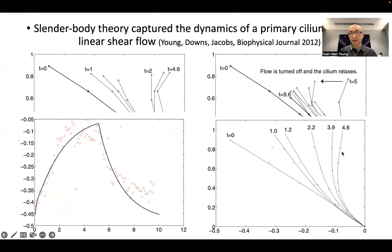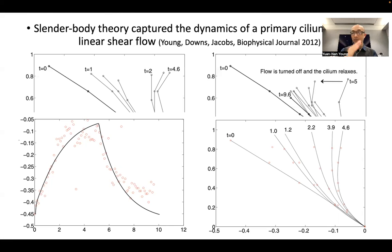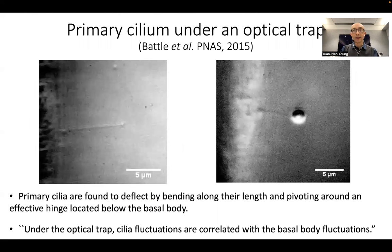The take-home message here is that in addition to modeling the primary cilium as an elastic filament, the basal anchorage as a rotational spring is also important for a good quantitative comparison between the modeling profile and dynamics of the cilium and experimental observations. It's very common to use external fluid flow in a microfluidic channel to deflect the primary cilium.